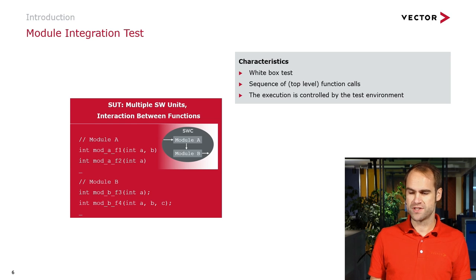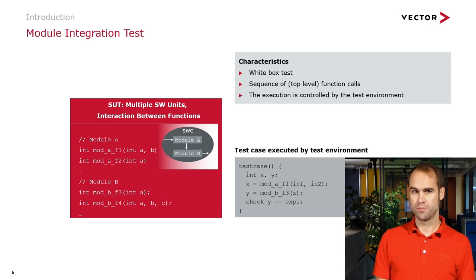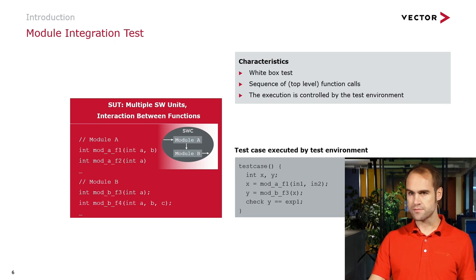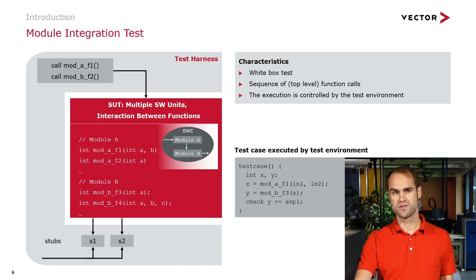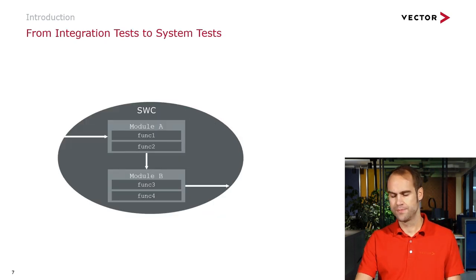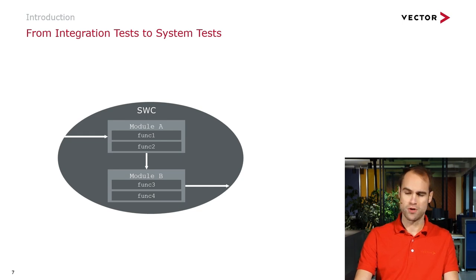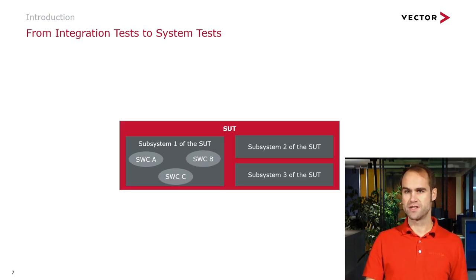Integration tests are again white box tests because you know how your modules are integrated with each other in the software component. This means that an integration test is set up by determining a set of input values, applying them to the modules in the exact order they will be called when integrated into the software component, and again checking the output of the computation. The execution of integration tests is very similar to that of unit tests because the test harness ensures the call sequence is executed and is also responsible for stubbing functions that are currently not available. Unfortunately, this is not the end of testing yet — you have developed your software component and it has been properly tested, but then it will be integrated with other software components into subsystems, which are further incorporated into your system under test.